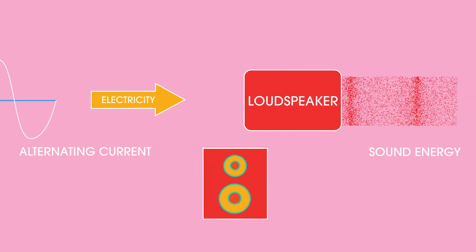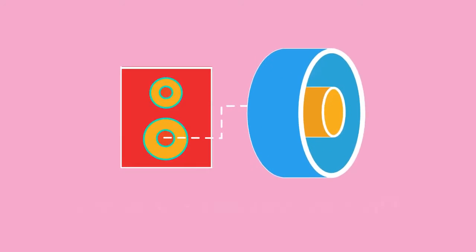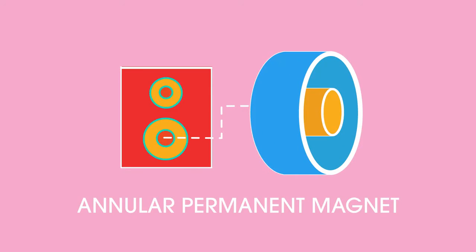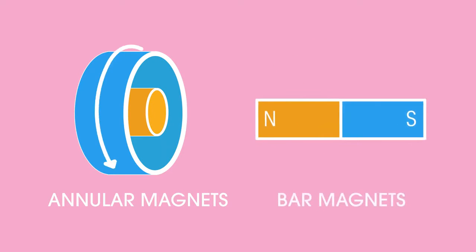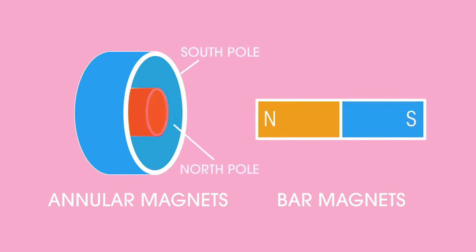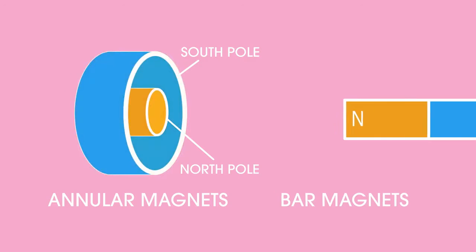Let's look at a simple loudspeaker first. At the heart of the loudspeaker is an annular permanent magnet, not the shape that you are used to seeing. Annular magnets are not bar, but ring-shaped. In a bar magnet, the ends of the magnet have opposite poles, but in an annular magnet, the central core has the opposite pole to the cylinder surrounding it.